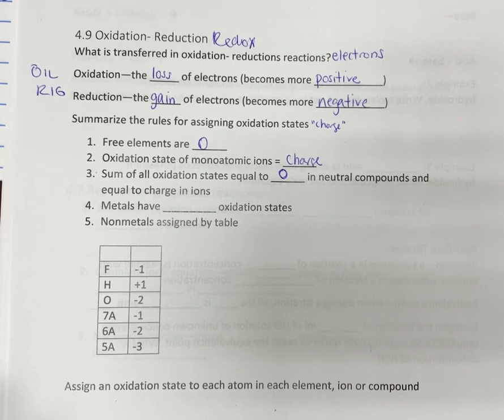Now, oxidation states, we also assign these for molecular compounds, which we would normally name using prefix system. So even if you have two non-metals, if it's neutral, the sum of them adds up to be zero.